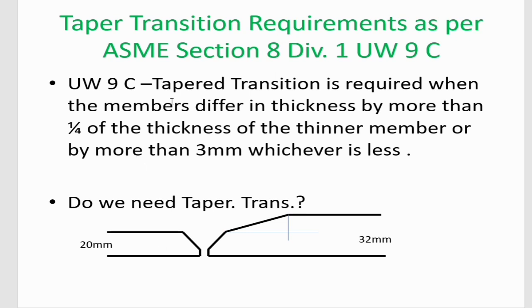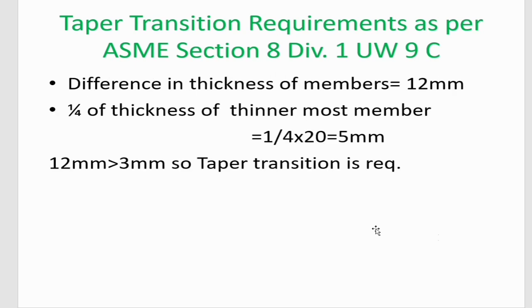As per UW-9C, taper transition is required when the members differ in thickness by more than one-fourth of the thickness of the thinner member, or by more than 3 mm, whichever is less. In our case, the difference in thickness is 12 mm, and one-fourth of the thickness of the thinner member is one-fourth of 20, which is equal to 5 mm.